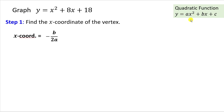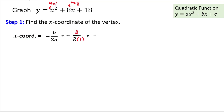Recall that a quadratic function has the general form y = ax² + bx + c, where a is the coefficient of x² and b is the coefficient of x. For our function, there's no written coefficient in front of x², so a = 1, and the coefficient of x is 8, so b = 8. Plugging into the formula: -8 / (2·1) = -8/2 = -4, so the x-coordinate of the vertex is -4.